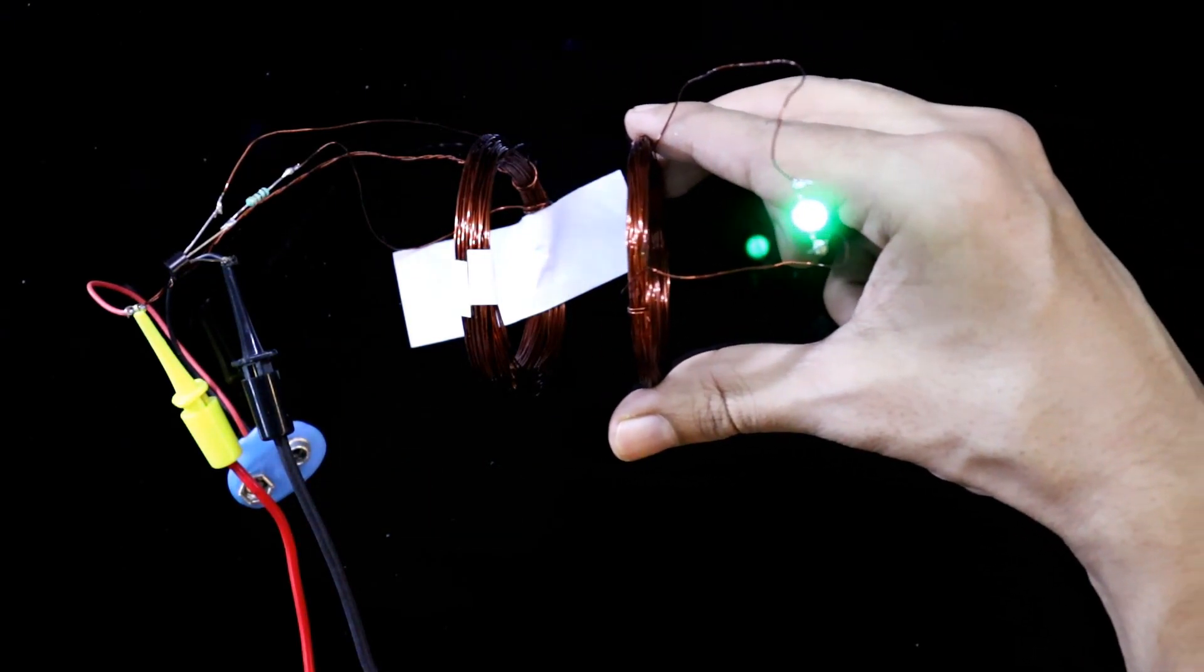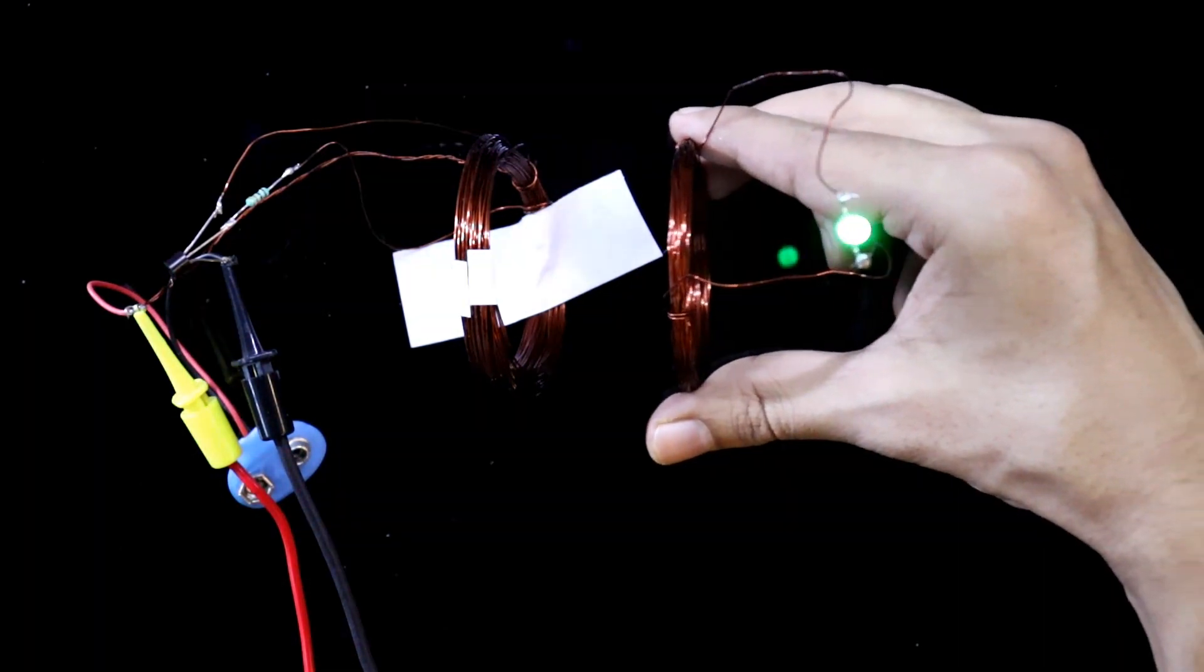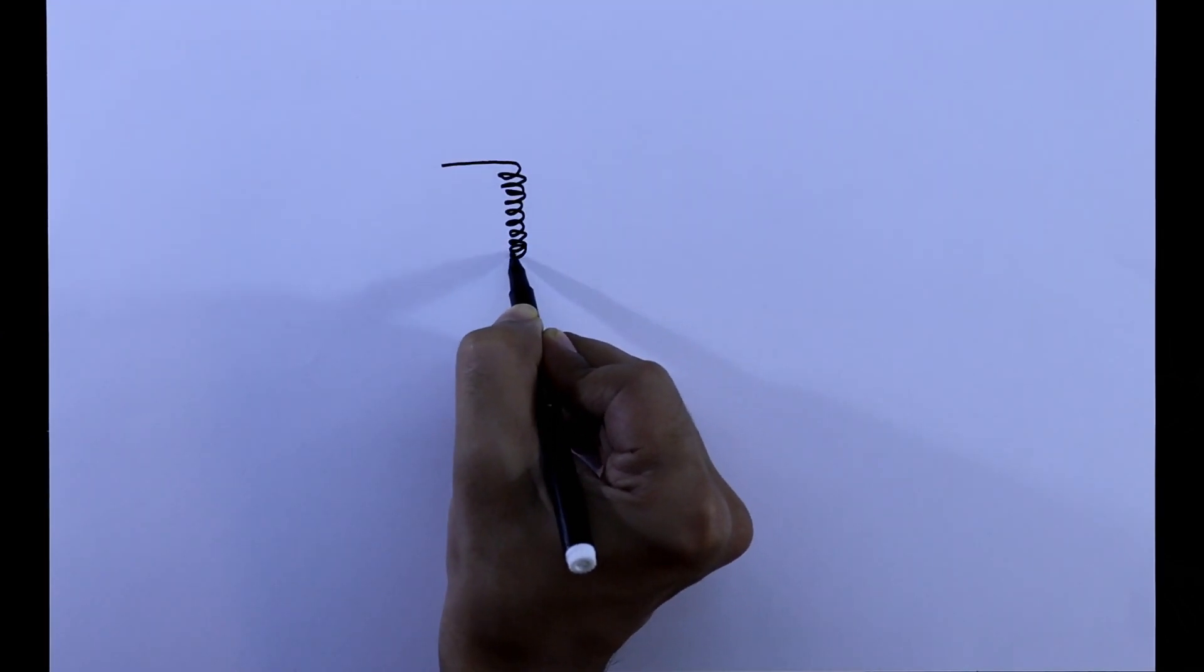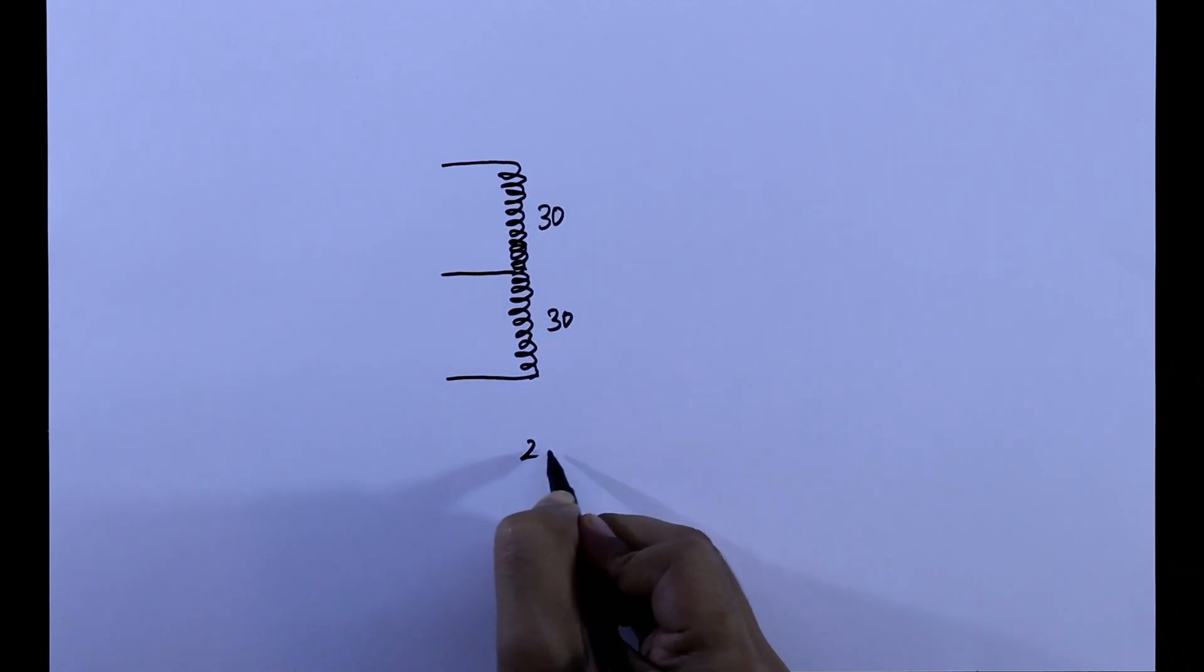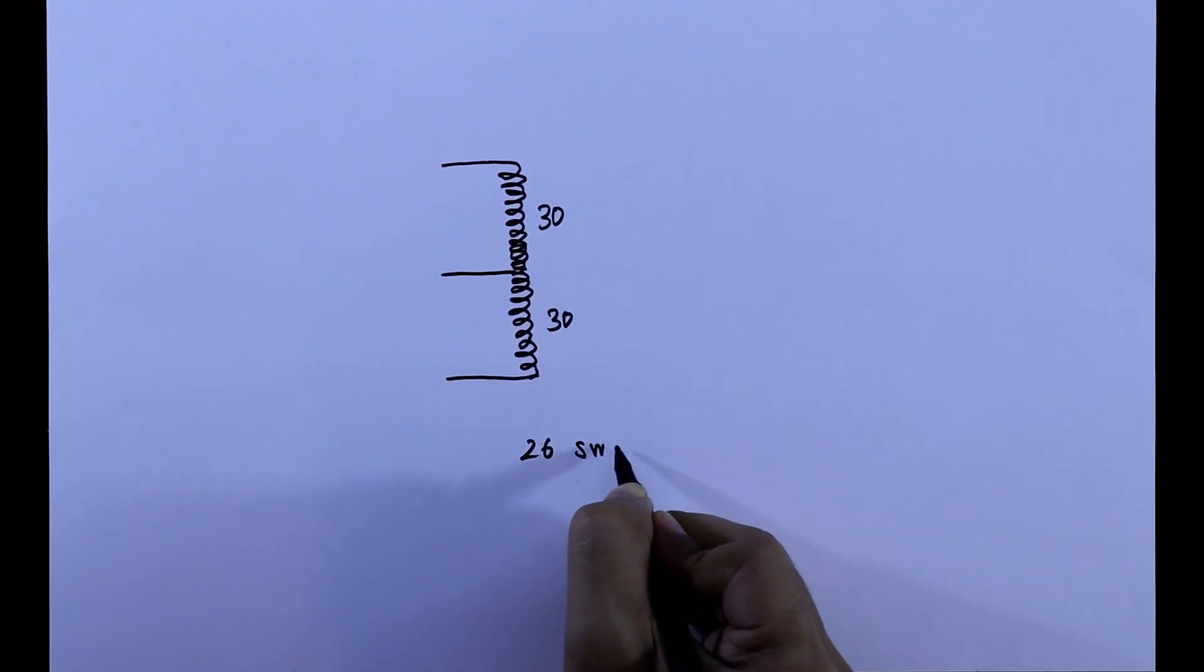Today we are going to see how to make wireless power transmission. For this we need a coil. It is center tapped coil. Here it has 30 turns. I will be using 26 SWG wires.